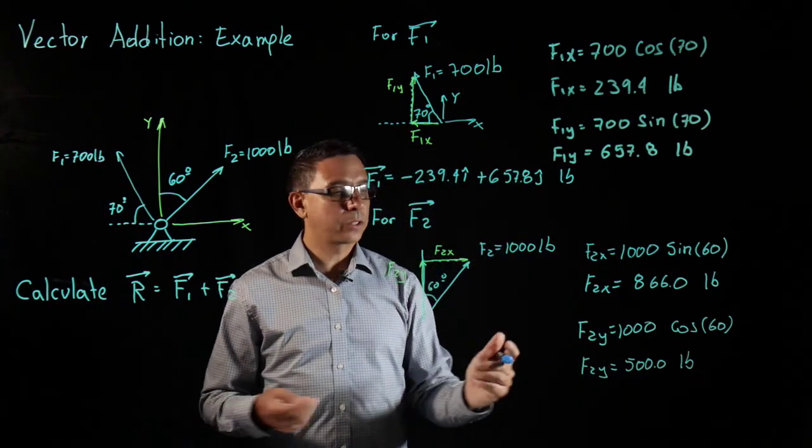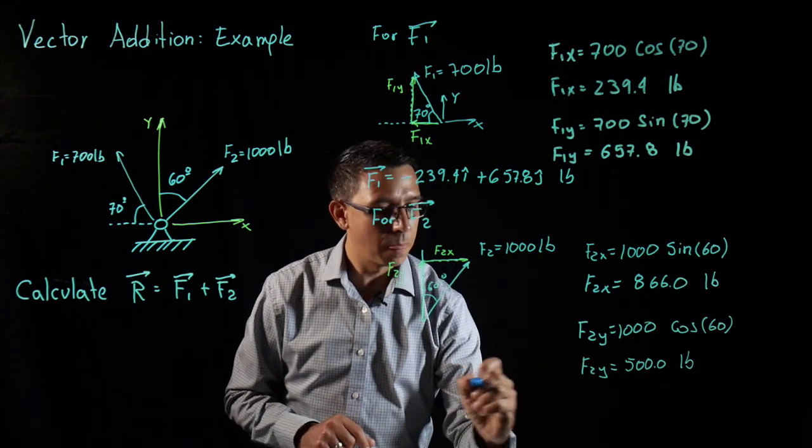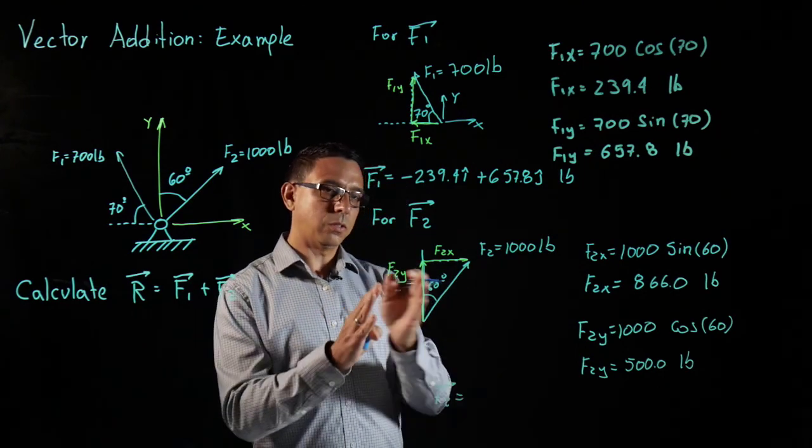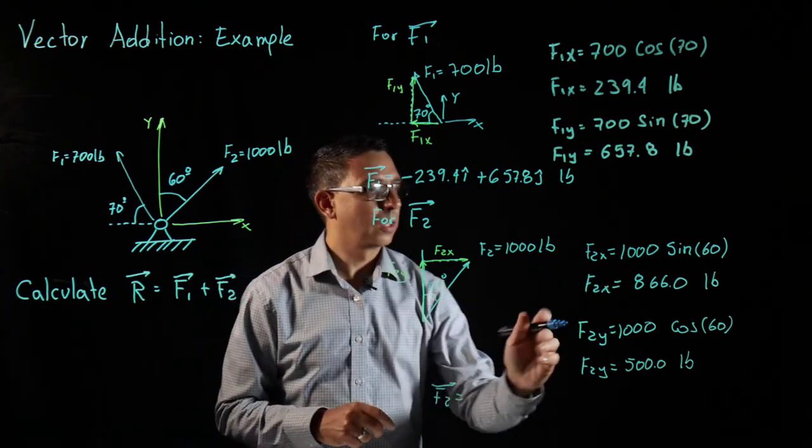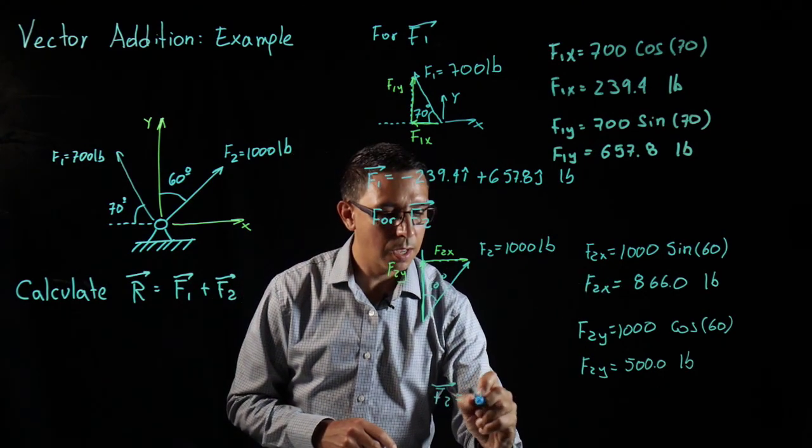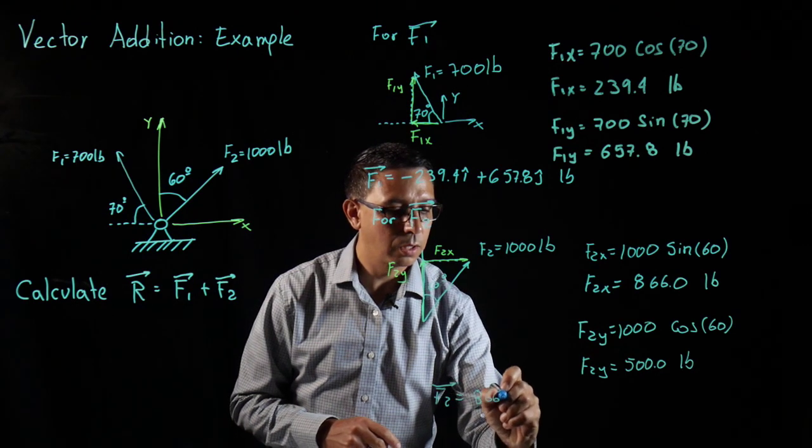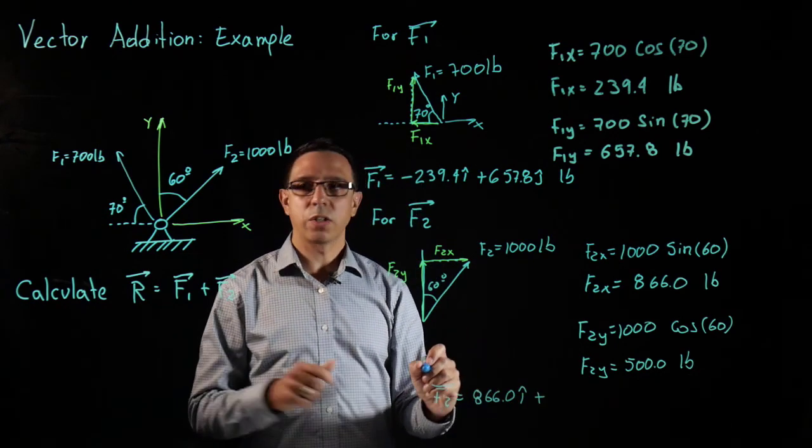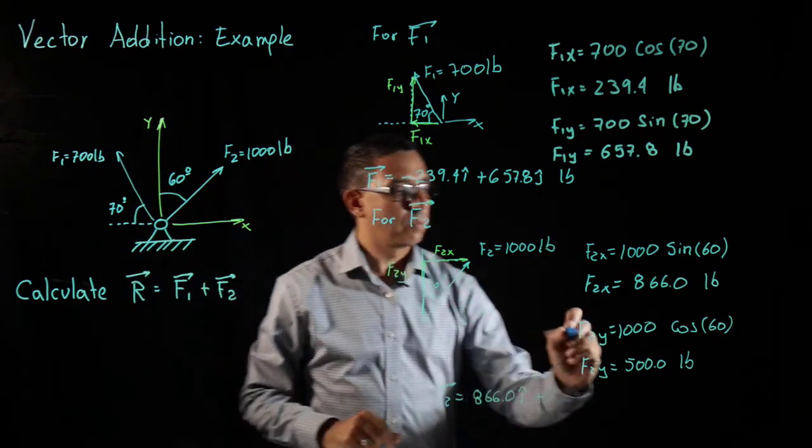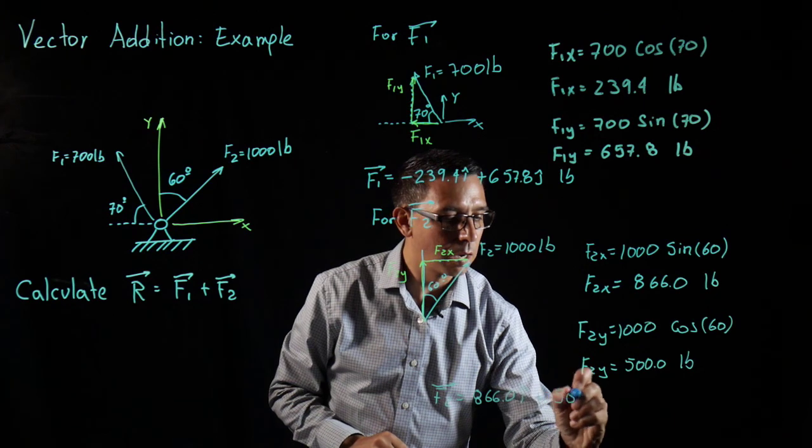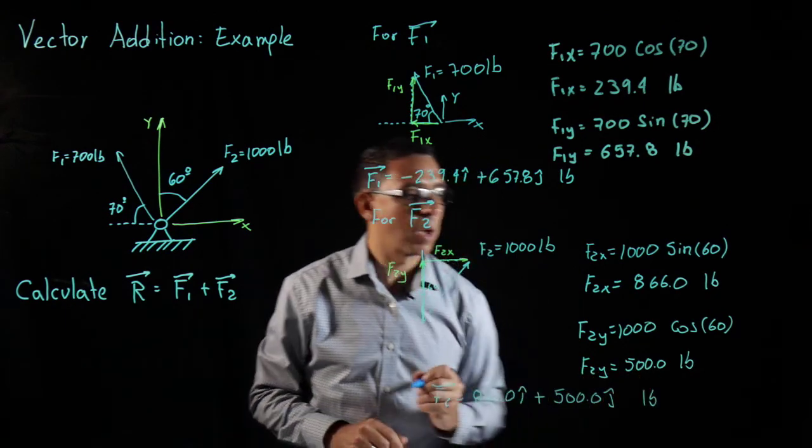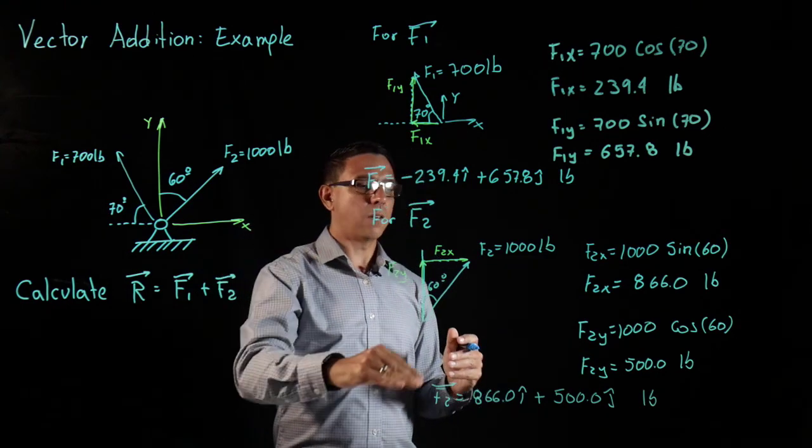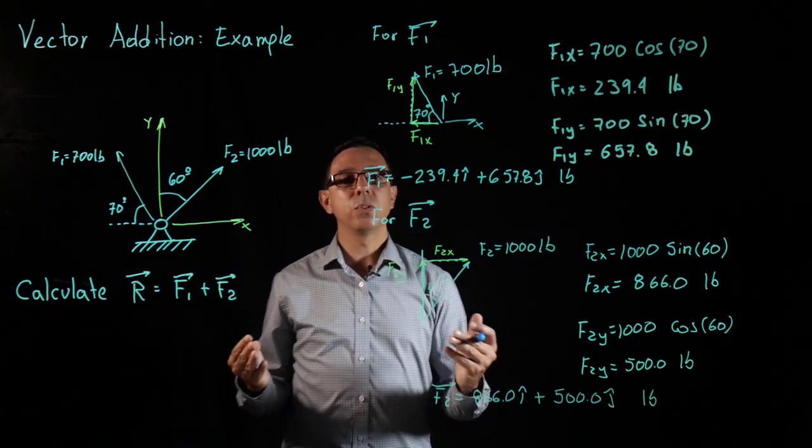So my F2 vector in Cartesian vector form is going to be equal to, let's see this one is going in the same direction as X so it will be 866.0i. This one is also going up which is the direction of my Y vector, plus 500j pounds. Okay, we have F1, we have F2.